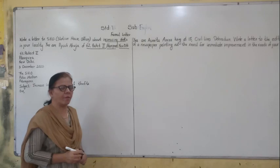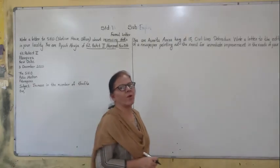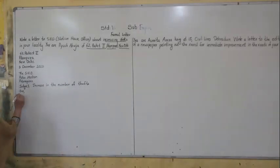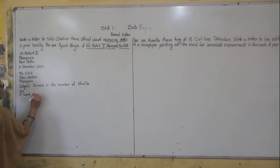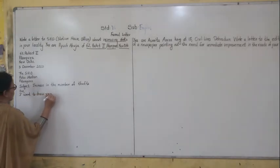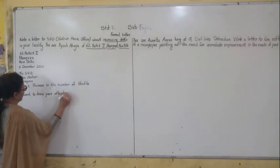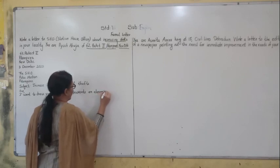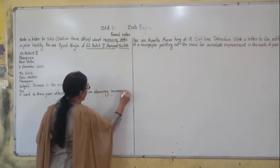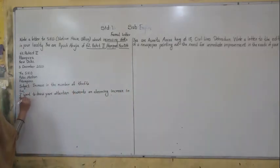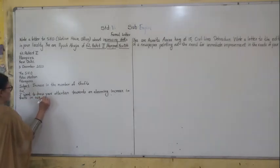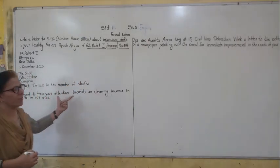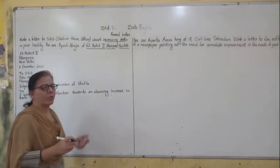Now you have to write the first paragraph — that is the introductory paragraph. You have to give a short description about the issue. You will start: 'I want to draw your attention towards an alarming increase in thefts in our locality.' So the subject is described a little more in the introductory paragraph.